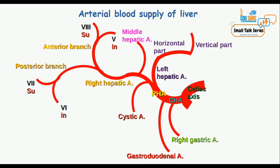The arterial blood supply of the liver is summarized here for your quick revision, along with an image which is reproducible in an exam. I hope you enjoy it. In the next part, we will see the venous supply as well as the drainage of the liver.